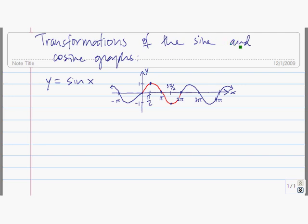In order to do transformations of the sine and cosine graphs, we have to be familiar with the graph of sine of x and the graph of cosine of x. So let's start with the graph of y equals sine of x. This goes on and on — it's called a periodic function. Every two pi units, the graph of y equals sine of x repeats.